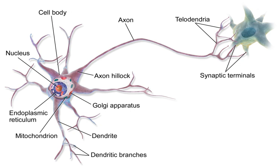A neural circuit is a population of neurons interconnected by synapses to carry out a specific function when activated. Neural circuits interconnect to one another to form large-scale brain networks. Biological neural networks have inspired the design of artificial neural networks.